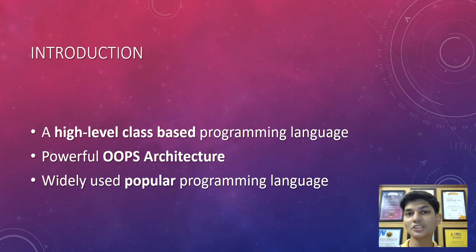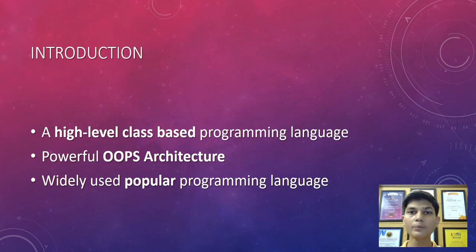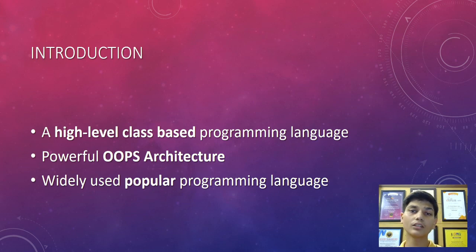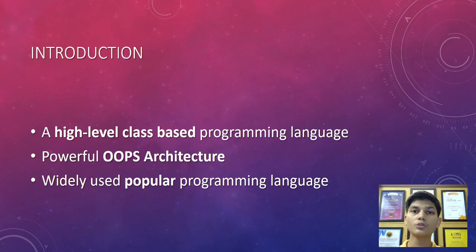The next thing mentioned is class-based. What does class-based mean? Class-based basically means that our Java program is structured in a way where we have multiple classes and we have segregated the code accordingly. For example, if we are creating a program named Person, a person can have multiple professions — they can be a doctor, a student, an engineer. To segregate them we use classes, and that is the way Java works.